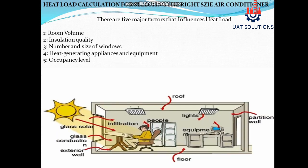Heat load calculation for selecting the right size air conditioner. There are five major factors that influence heat load: one, room volume; two, insulation quality; three, number and size of windows; four, heat generating appliances and equipment; five, occupancy level.